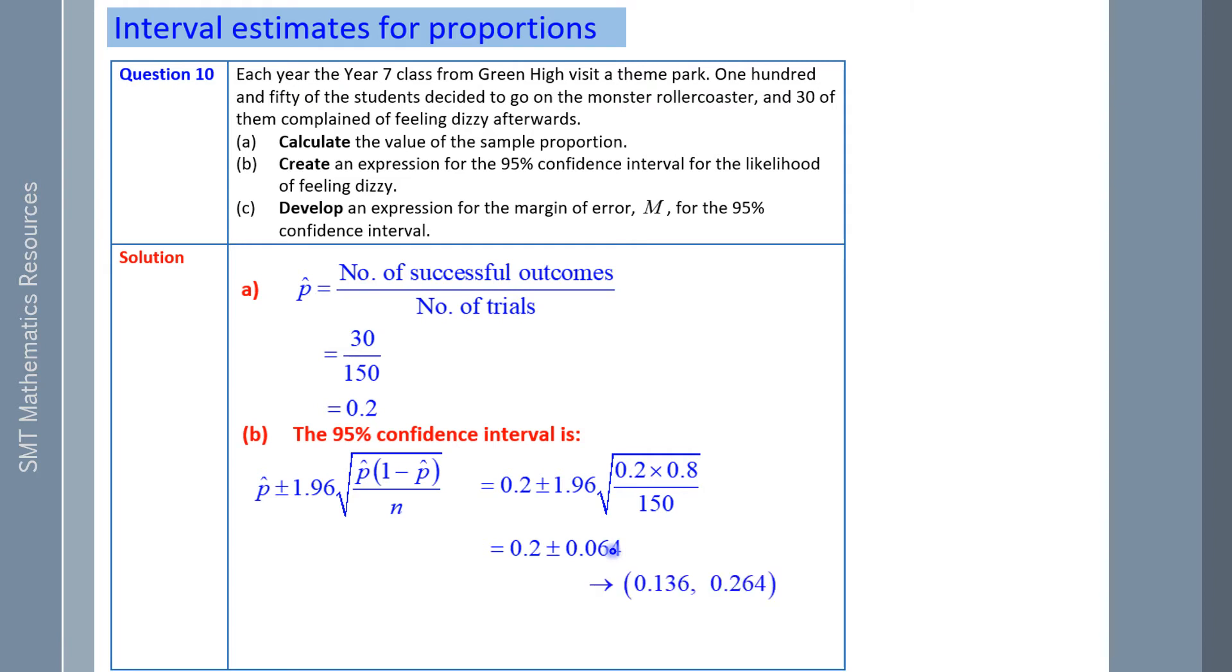Which gives us values between 13.6% and 26.4%. We can be 95% confident that between 13.6% and 26.4% of Year 7 students will be dizzy.